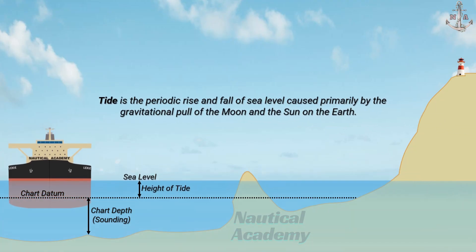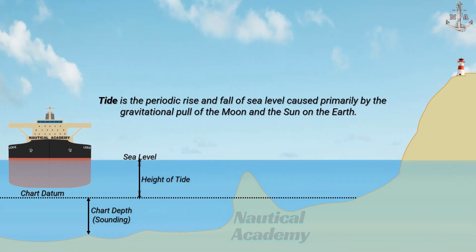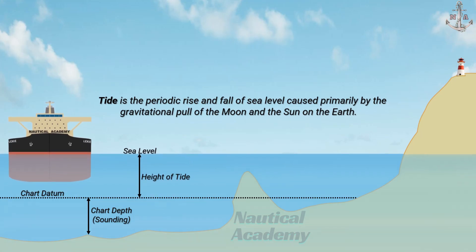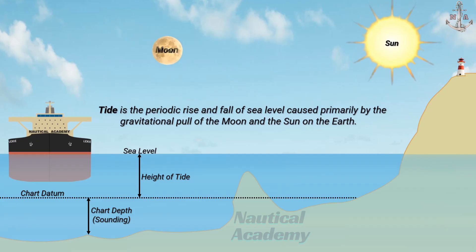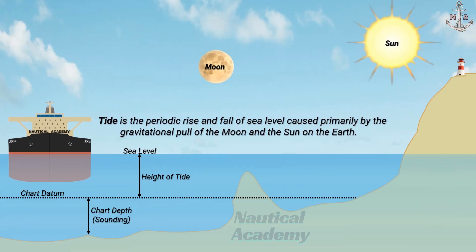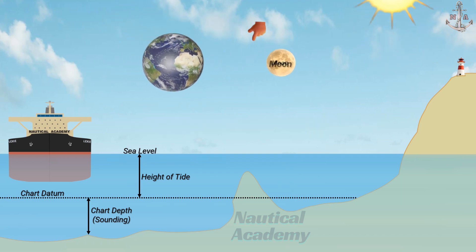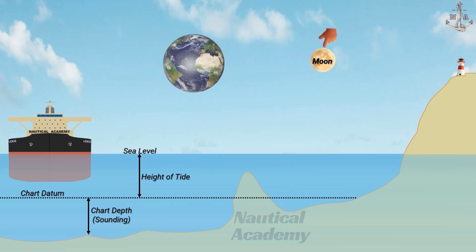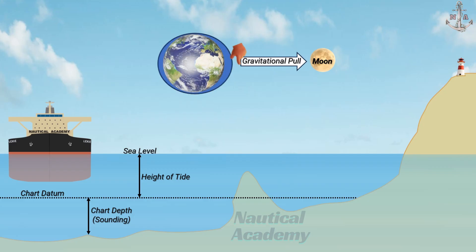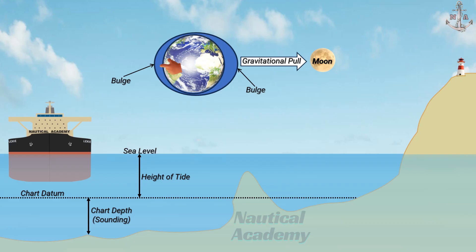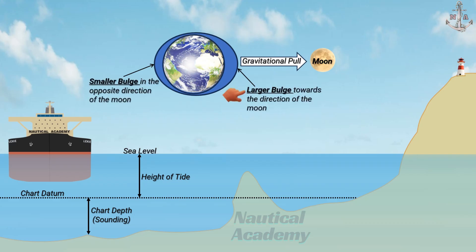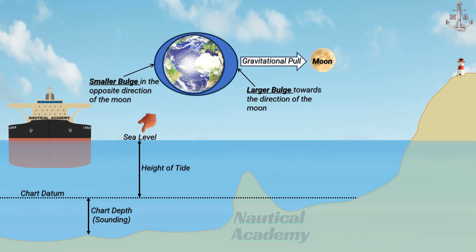Tide is the periodic rise and fall of sea level caused primarily by the gravitational pull of the Moon and the Sun on the Earth. The Moon has a greater effect than the Sun because it is much closer to Earth. The Moon exerts a gravitational pull that causes the ocean to bulge outward in the direction of the Moon, and also on the opposite side. This bulging of the ocean causes a rise in sea level, known as high water.